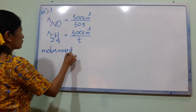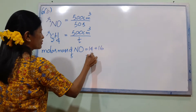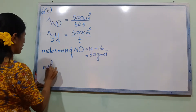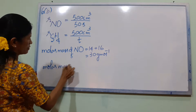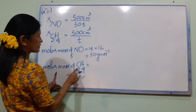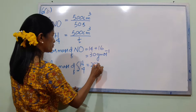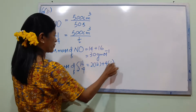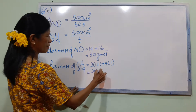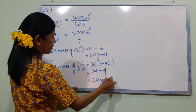Molar mass of NO: N is 14, O is 16, giving 30 g/mol. Molar mass of C2H4: two carbons give 2×12, plus four hydrogens give 4×1, total equals 28 g/mol.